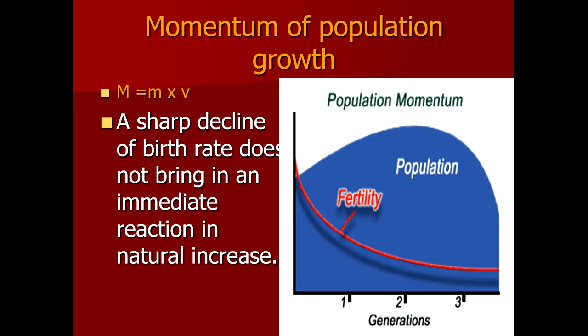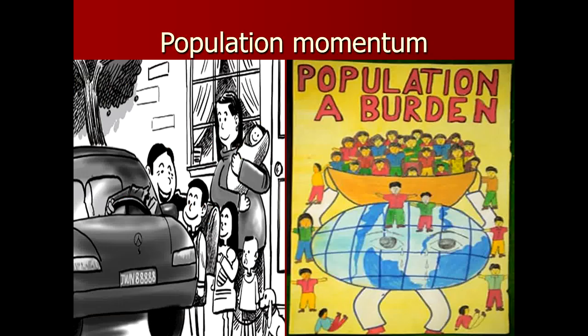As shown by the population pyramid, if Pakistan's population attains replacement level fertility — each couple producing only two children — the population will still continue to grow for a specific time period. There will be no decline due to population momentum. On average, Pakistani females were producing five to six children about 15 to 20 years ago.